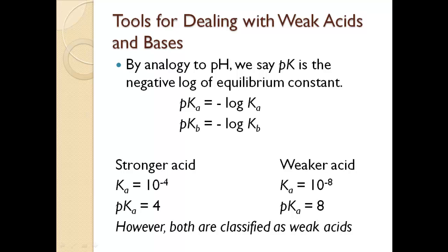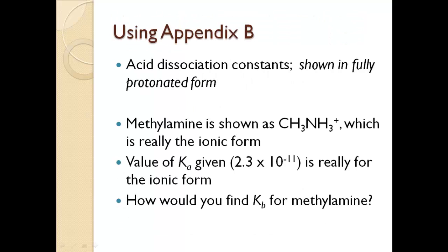You'll need to use Appendix B, which lists all the acid dissociation constants you'll need. Each compound is shown in its fully protonated form — for example, methylamine (CH3NH2) is listed as CH3NH3⁺, and the Ka value given (2.3 × 10⁻¹¹) is for that ionic form, not the neutral amine. To find Kb for methylamine, use Kw = Ka × Kb and solve accordingly.